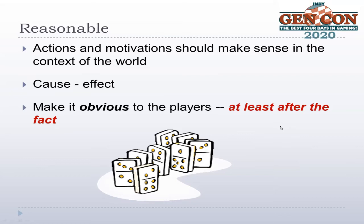Sometimes the chain of cause and effect — even when the NPC is acting with completely logical, reasonable motivations — is completely invisible to your players, and that's just embittering and frustrating. Do everything you can to telegraph why a particular NPC does something. Sometimes it needs to be a secret, but at least after the fact you need to reveal it, so they put faith back in your ability to have a reasonable world. This above all things is probably the most important factor for an NPC being memorable and allowing your players and readers to suspend disbelief.